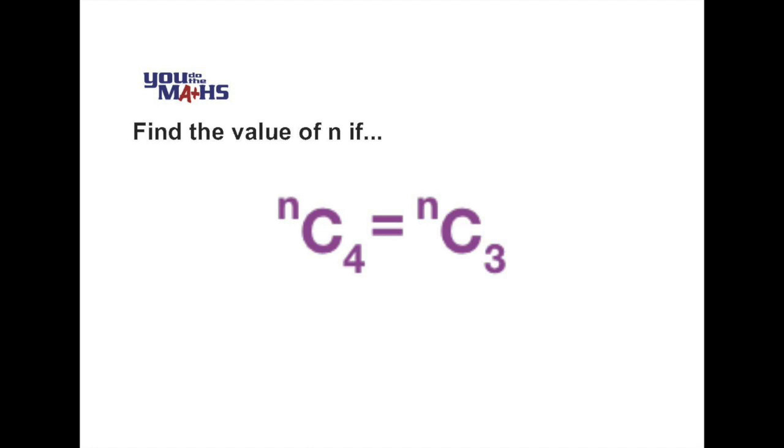Sometimes in problems involving counting techniques, the questions branch off into algebra type problems and we are asked to use the formula for combinations or permutations to solve for unknowns. In this case we are being asked to solve for n choose 4 equaling n choose 3, in other words what value of n makes that equation true.